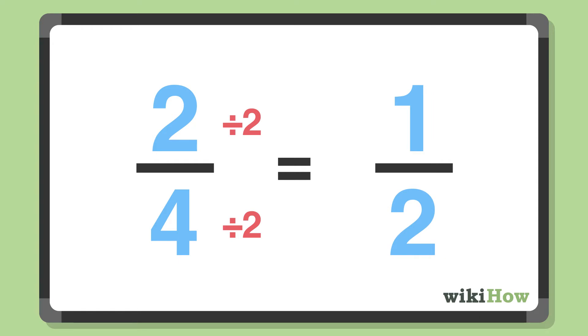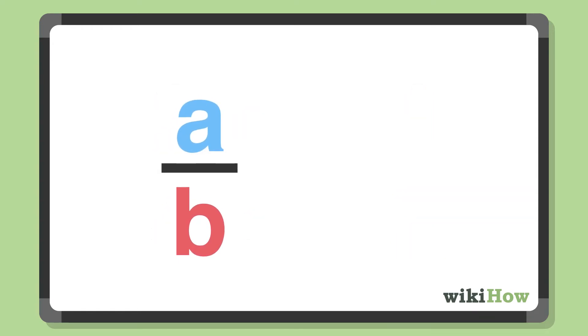A fraction where the numerator is larger than the denominator is called an improper fraction. This kind of fraction represents a combination of a whole number and a fraction.